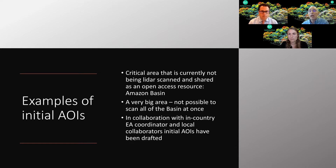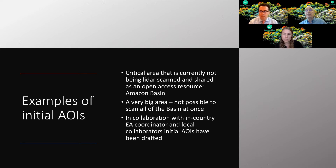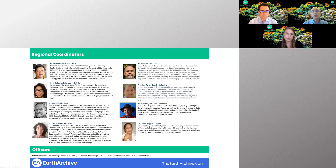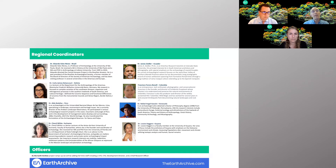Examples of initial AOIs could be areas that are critical to be scanned, are not being scanned yet, have very important cultural heritage, and where there is ecological knowledge that could be lost. For the Amazon basin, which is a very big area that we can't scan all at once, we've been identifying these types of areas. Regional coordinators have been helping us identify these areas, and we'll show some maps of the draft AOIs.